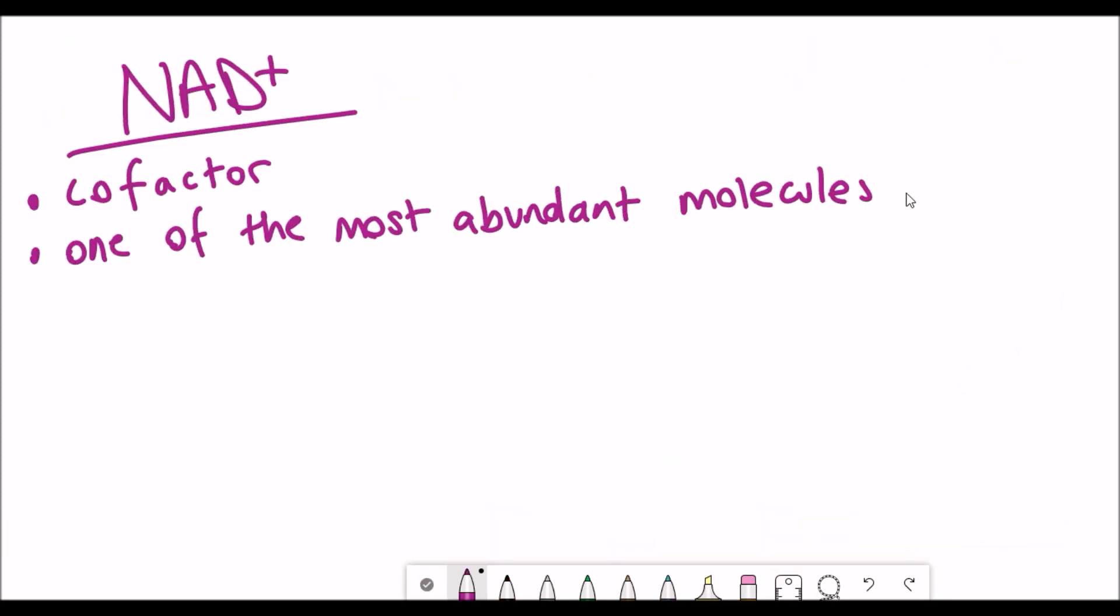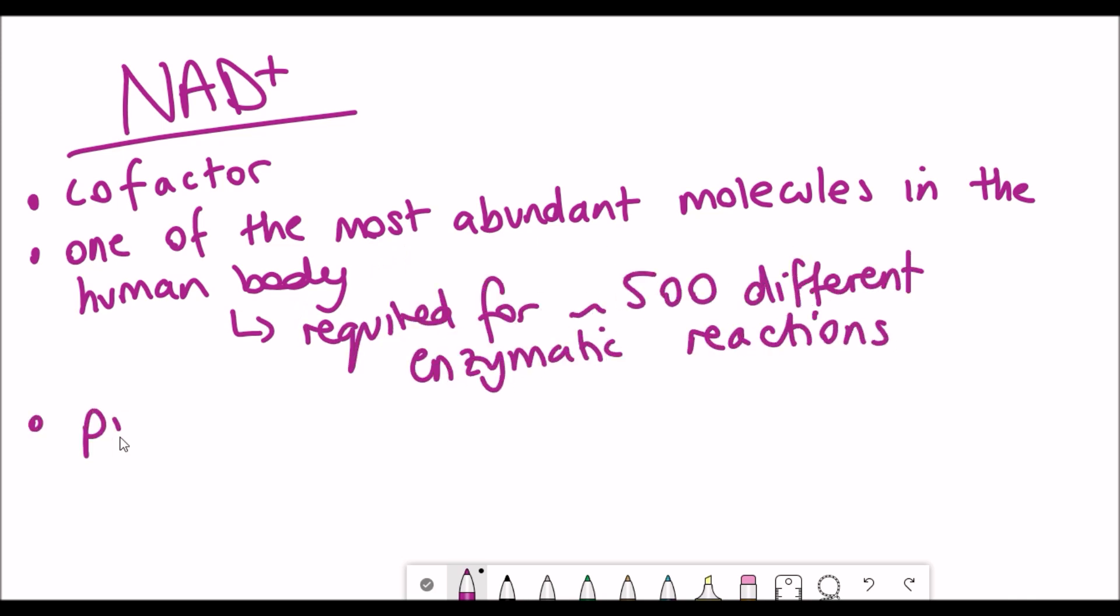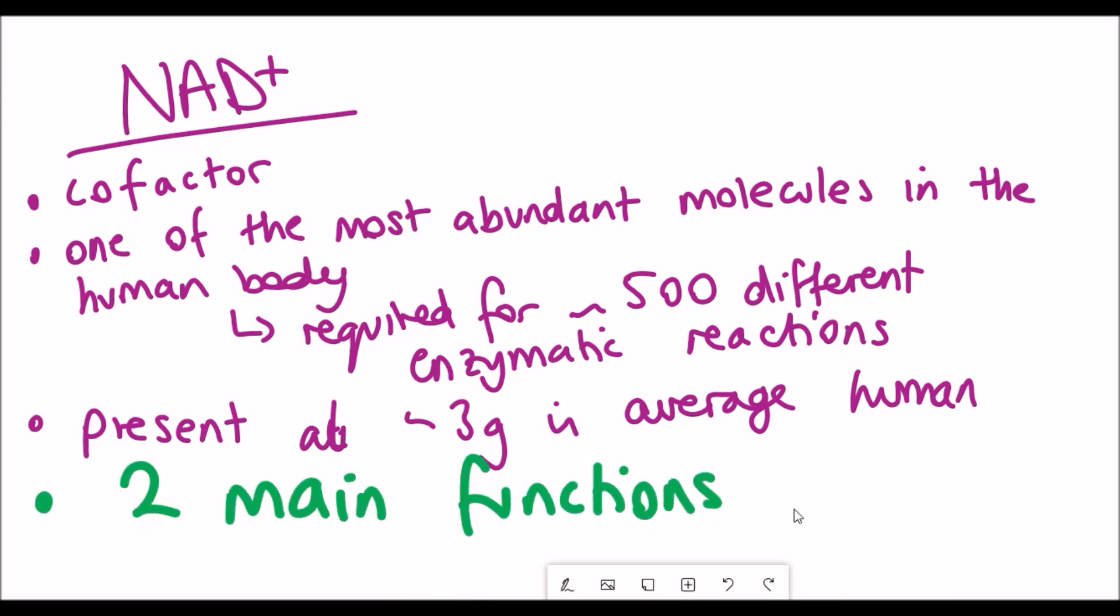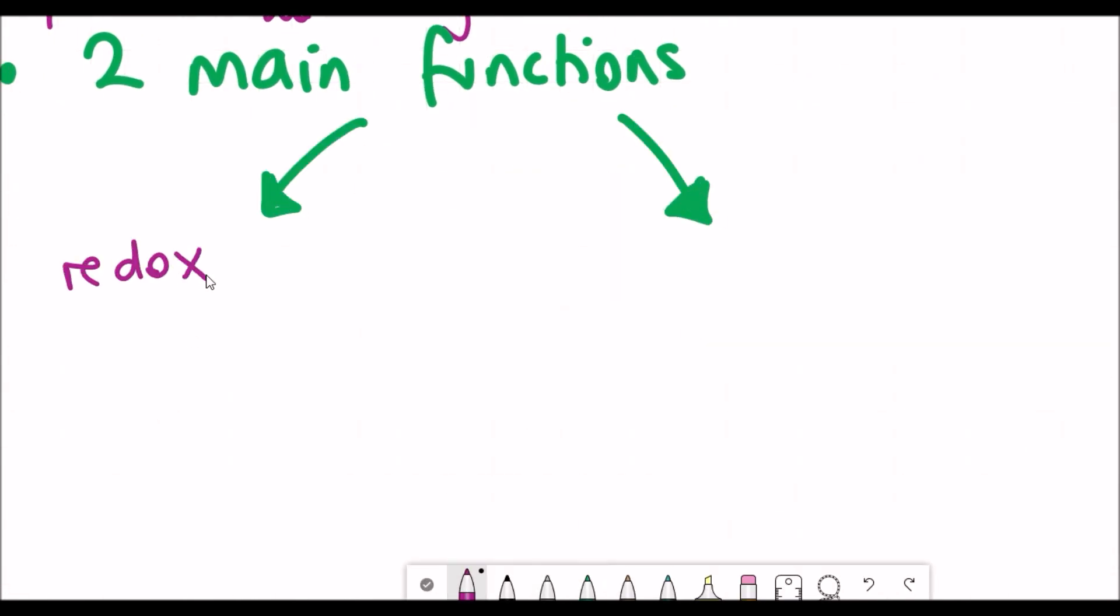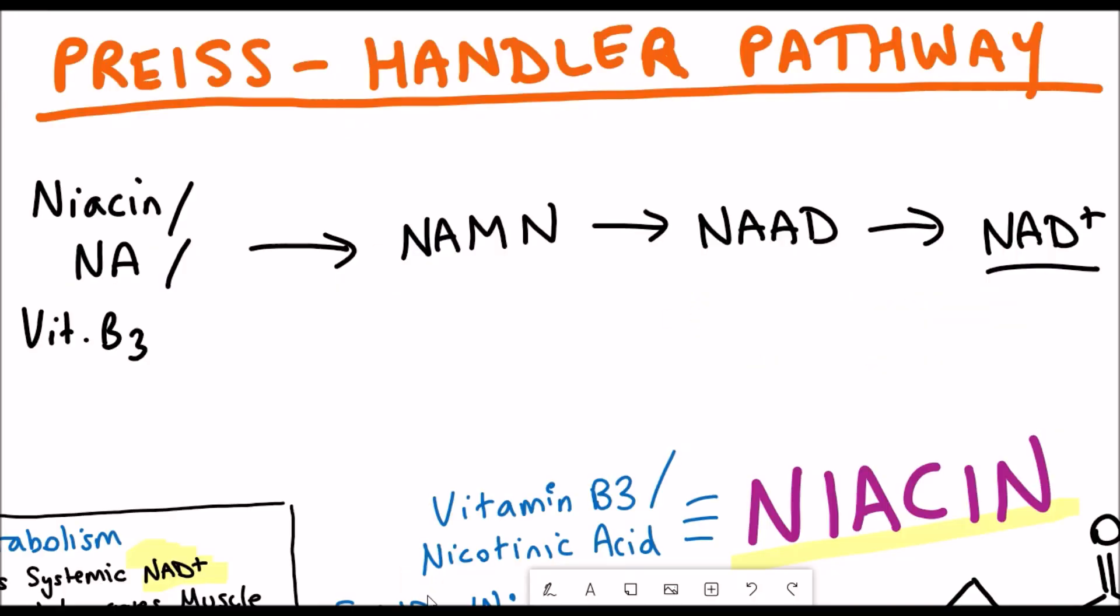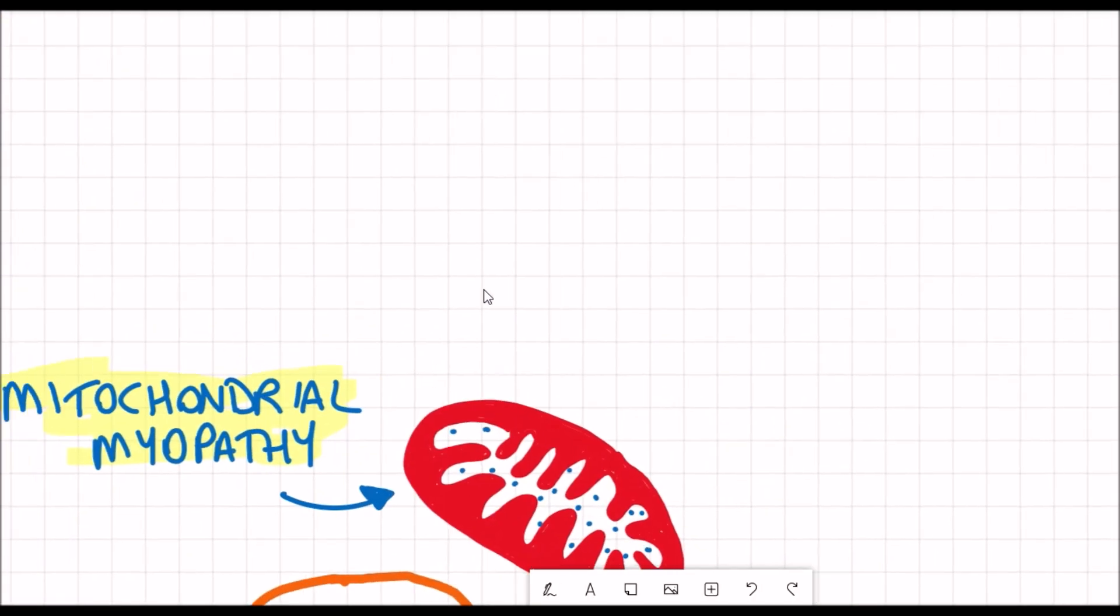And so why do we care so much about NAD Plus? Well it's one of the most abundant molecules in the body and is a really important cofactor for two major functions. One of which is acting as a redox coenzyme and the other is acting as a substrate for NAD requiring enzymes.